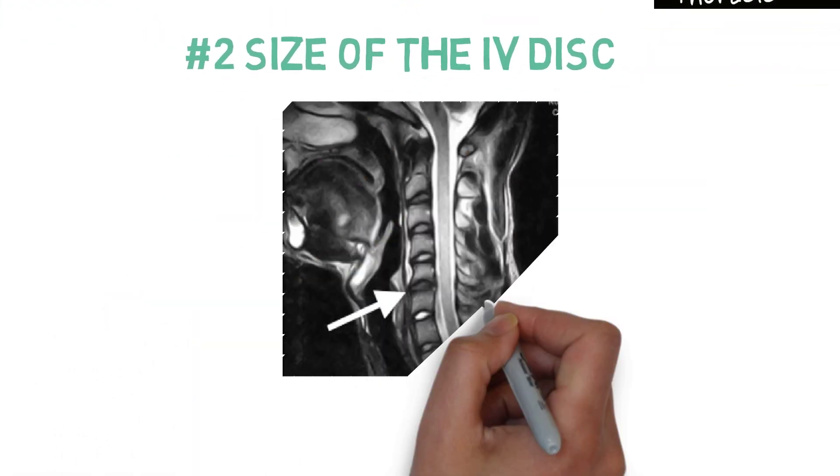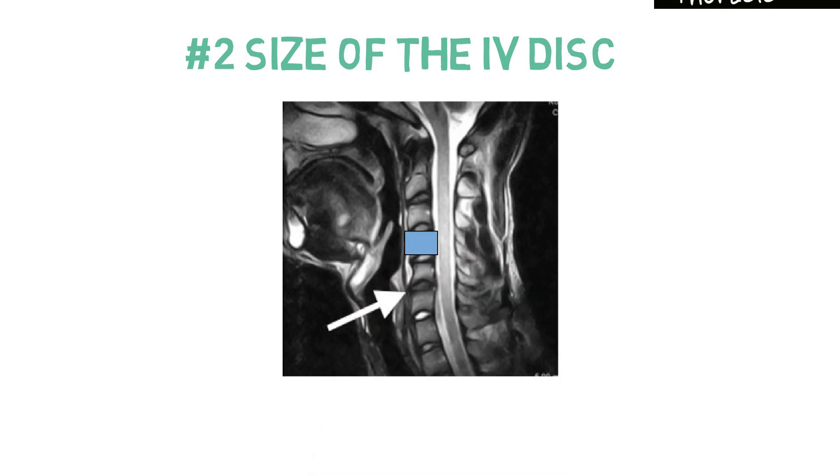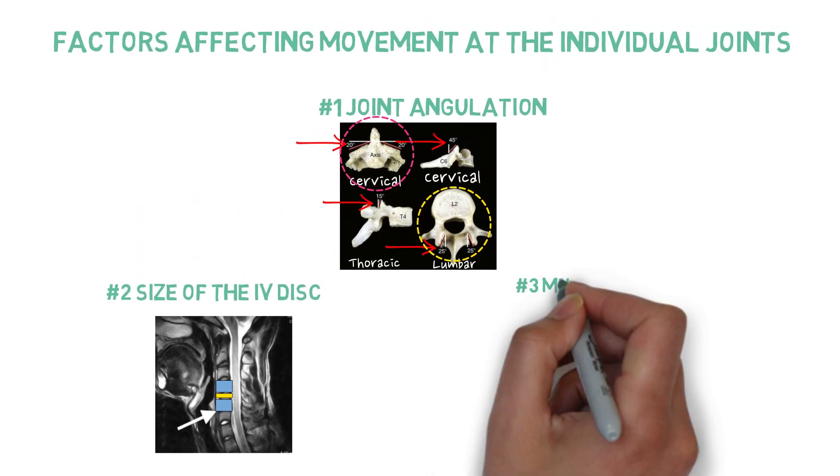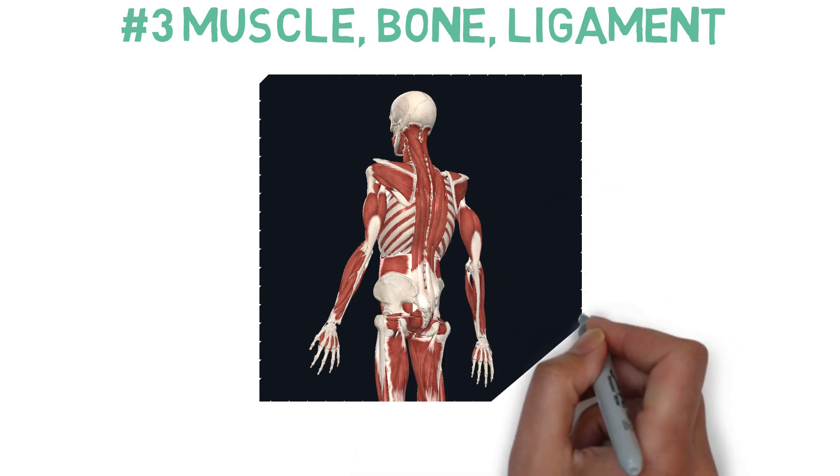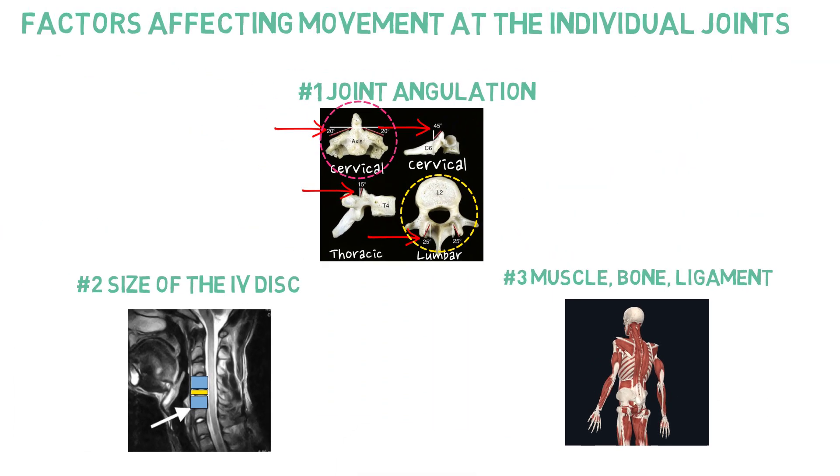The next factor is the size of the intervertebral disc, or specifically, the ratio of the size of the disc to the size of the vertebrae. And finally, the last factor is the local muscle action, of course, bony and ligamentous attachments.